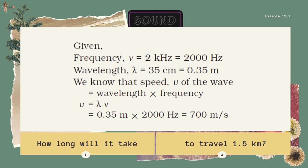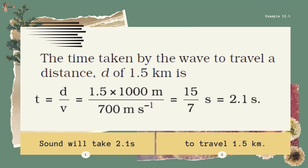Example: A sound wave has a frequency of 2 kHz (2000 Hz) and a wavelength of 35 cm (0.35 m). How long will it take to travel 1.5 km? Speed = wavelength × frequency = 0.35 × 2000 = 700 m/s. Thus, sound will take 2.1 seconds to travel 1.5 km.